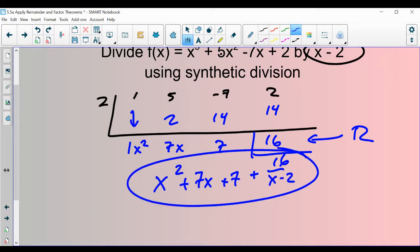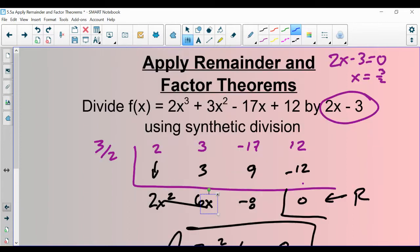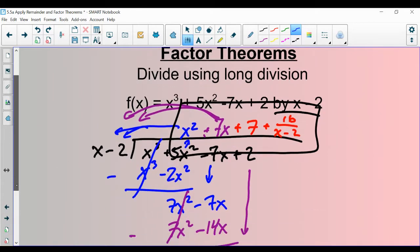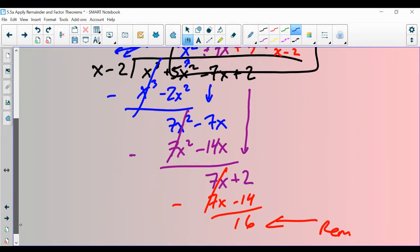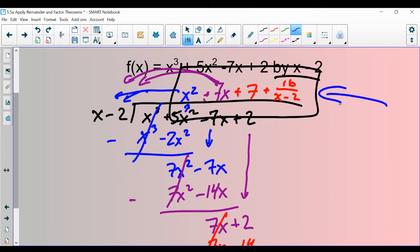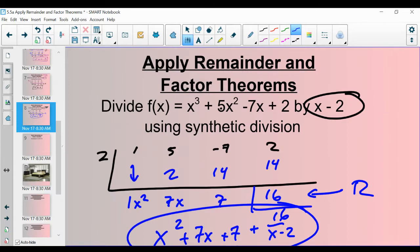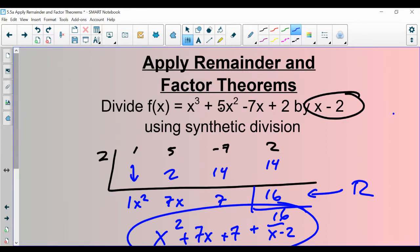And this actually should look familiar because in 5.5a, we did this exact same problem using polynomial long division. It did take more work, more time, but notice we got x squared plus 7x plus 7 plus 16 over x minus 2. The exact same thing that we got right here.